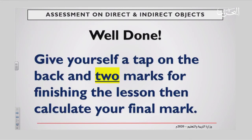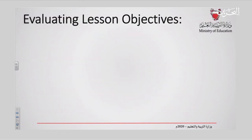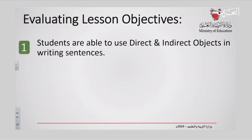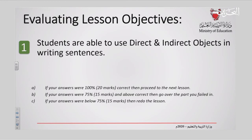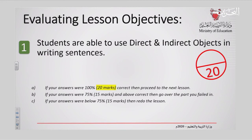Well done! Give yourself a tap on the back and two marks for finishing the lesson, then calculate your mark. Evaluating lesson objectives — number one: you are now able to use direct and indirect objects in sentences, and you have a mark of 20.